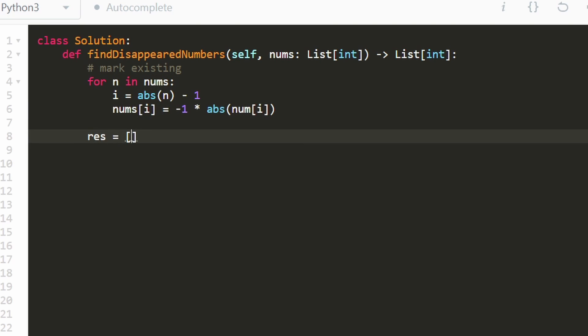So now we're going to build our result. And by the way, they say that the output result does not count as extra memory in this case. So technically we are using extra memory, which is funny. But now we're going to go through every value in nums. And I'm going to use a nice little helper function in Python called enumerate, which lets us go through the index and the value simultaneously. So i is the index and n is the value. And we know that if n is positive, that means this value does not exist in our input array.